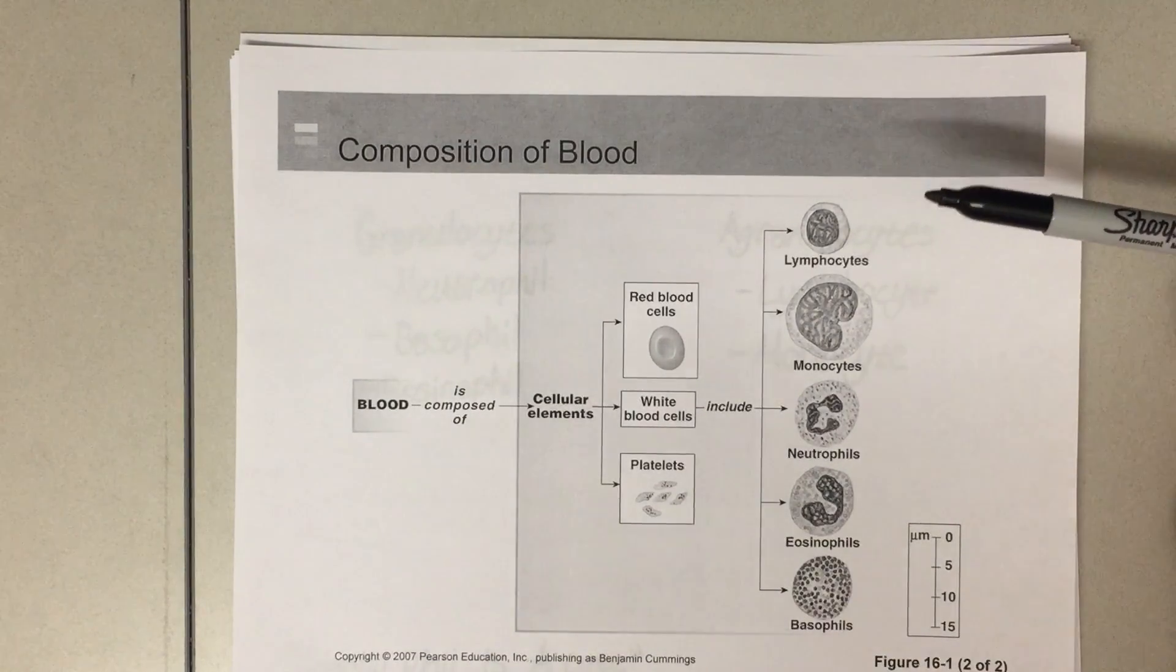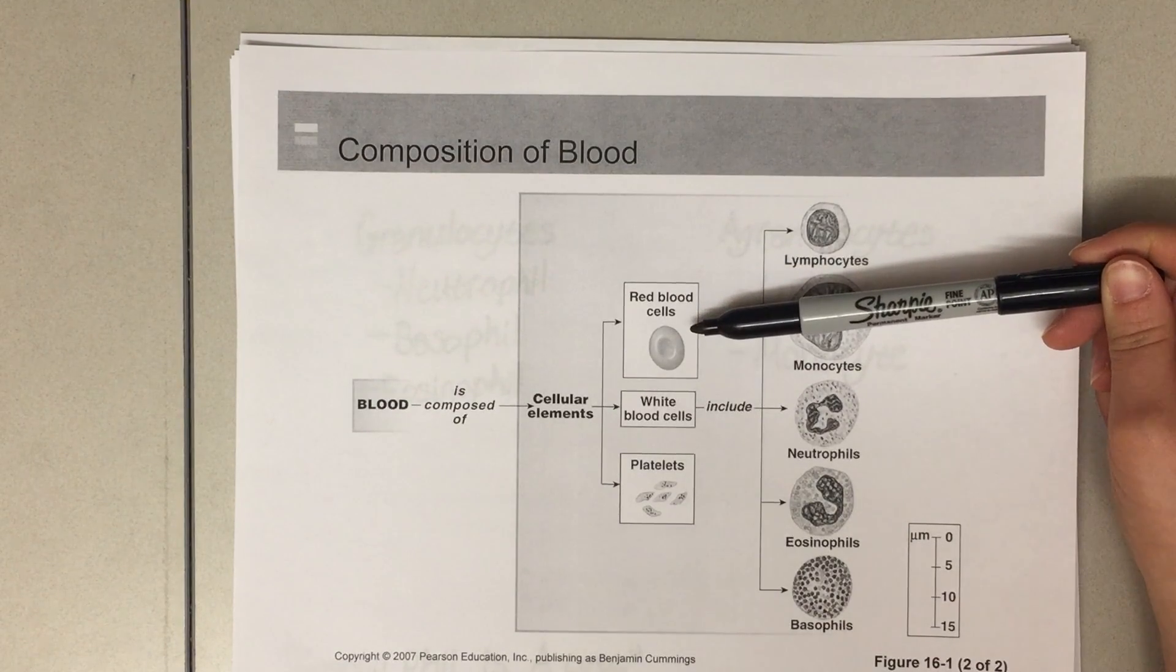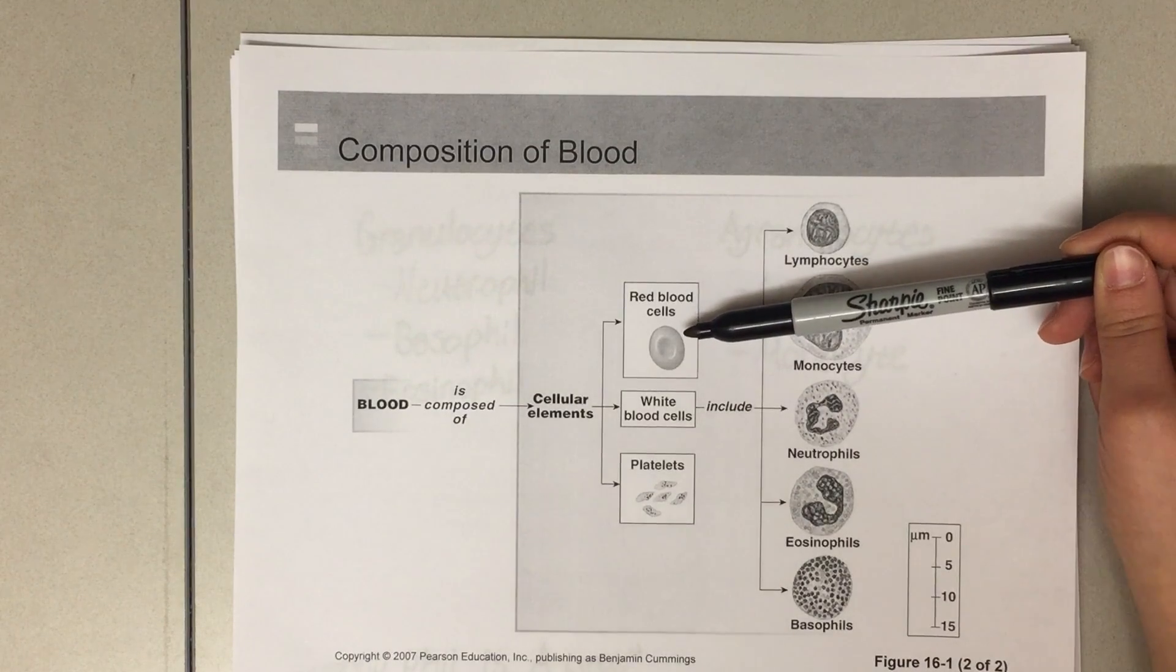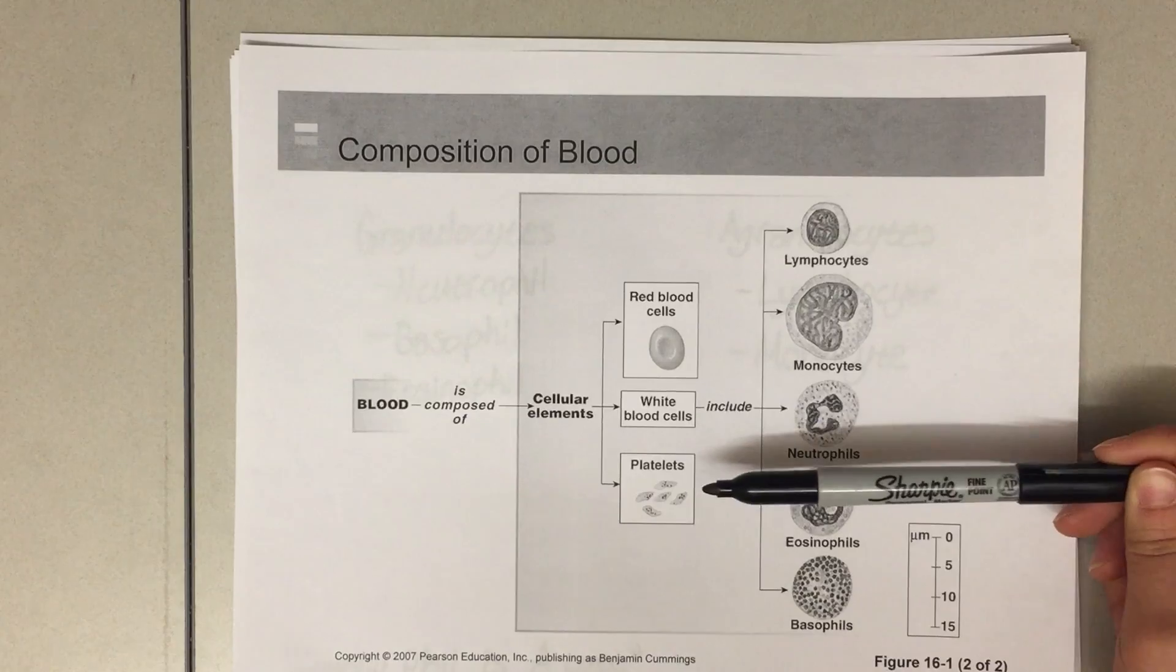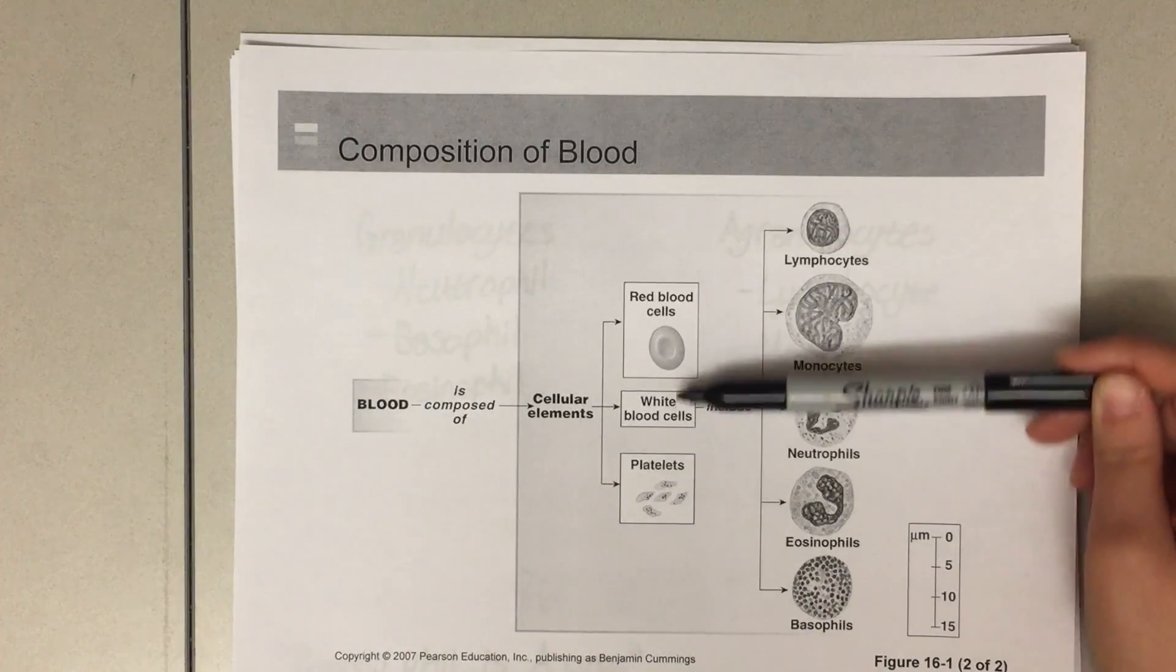Blood contains three major cell types. The first is red blood cells, also called erythrocytes. These red blood cells are responsible for carrying oxygen throughout the body. There's also platelets, also called thrombocytes, which help with blood clot formation.